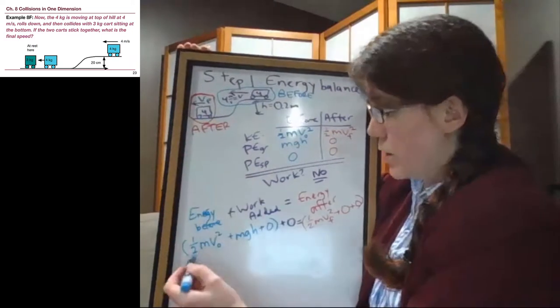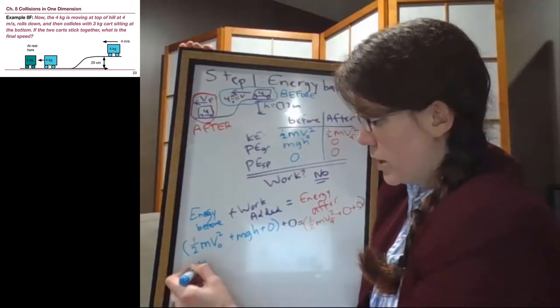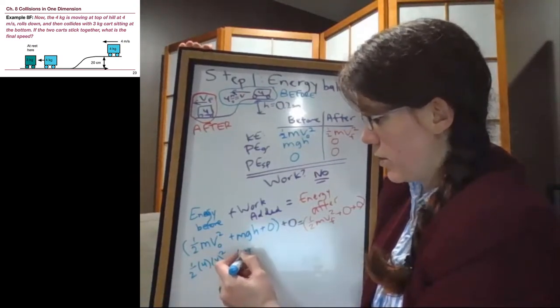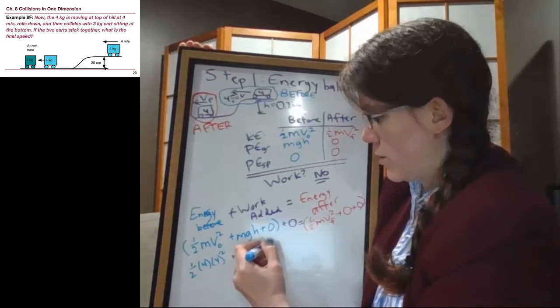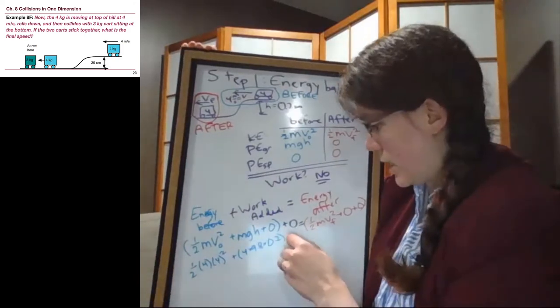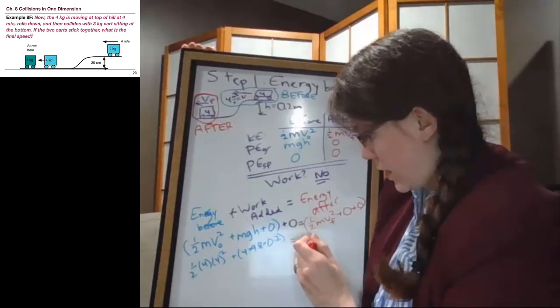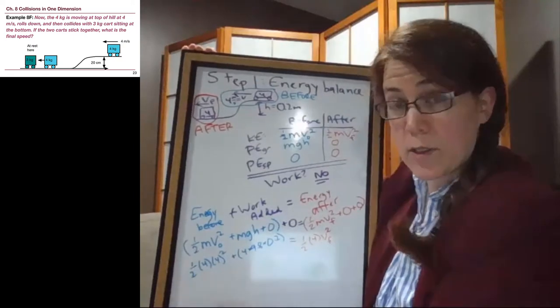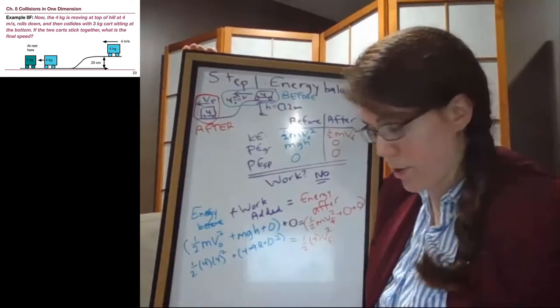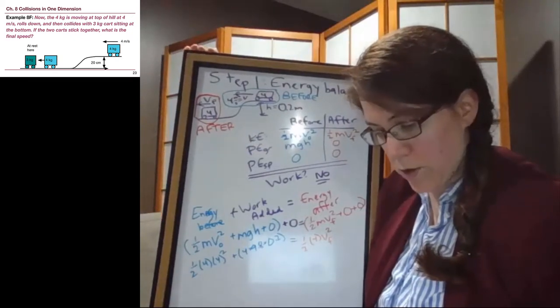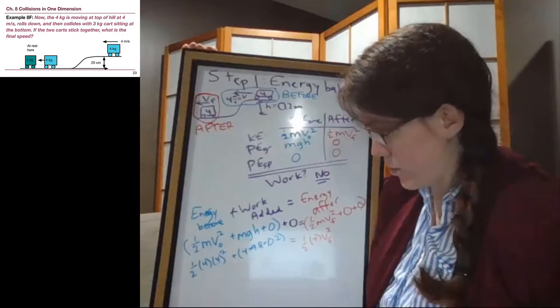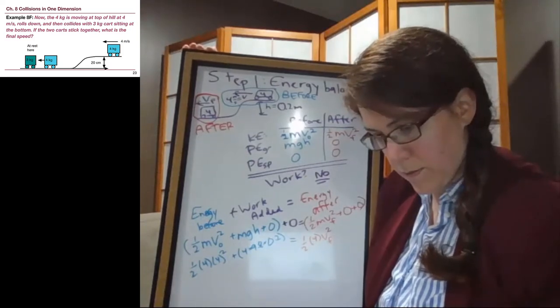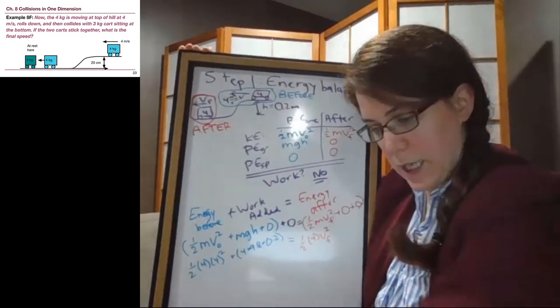Okay, we can plug in the numbers that we have. So we have 1/2 times 4 kilograms times moving at 4 meters per second squared, plus 4 kilograms times 9.8 times a height of 0.2. And then that equals 1/2 times 4 times V final squared. This entire left side we can plug into our calculator. I'm not going to stop and write down the two separate terms. I'm just going to do the whole left side.